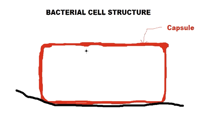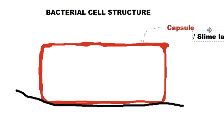The capsule has another form called the slime layer, as many may call it. The capsule is a more viscous layer, but if this capsule is not arranged tightly and is loosely arranged around the bacteria, it is called the slime layer — made up of the same things. So we can say that the capsule and the slime layer are essentially the same thing. That's about the outermost layer — let us now look at what is present inside the bacteria after the capsule.